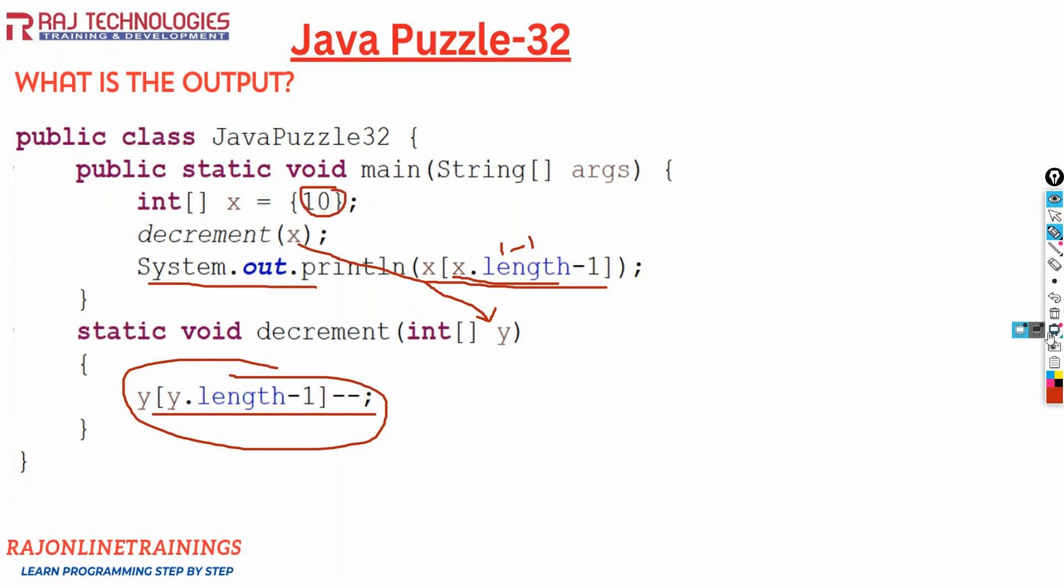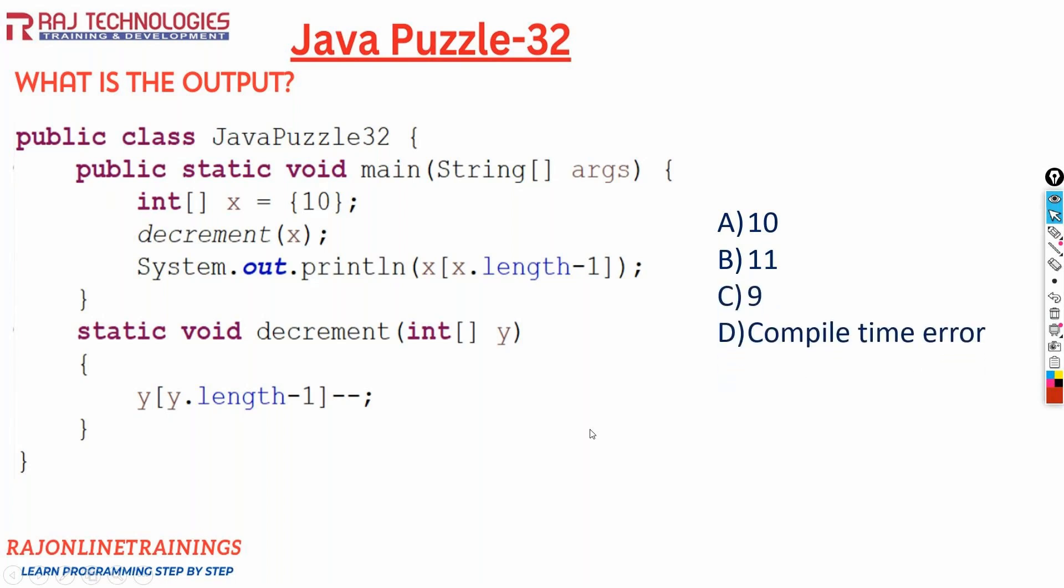Now let us understand what will be the output of this code. What are the options present for this question? The options are A) 10, B) 11, C) 9, and D) compile time error.